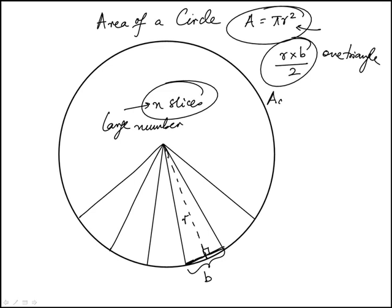Now, area of the entire circle would be n times that, nrb over 2. And I can rewrite this as r times nb over 2.